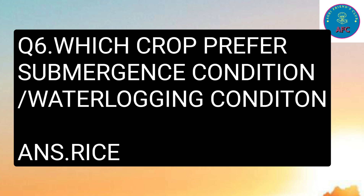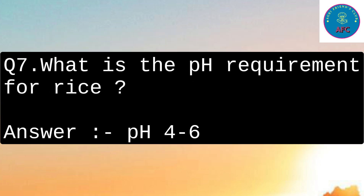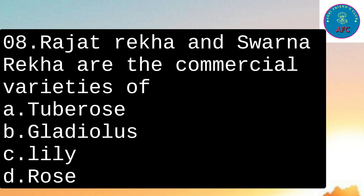You may be asked which crop prefers submergence or water logging condition — rice crop prefers submergence or water logging condition. Moving on to the next question: What is the pH requirement for rice? The correct answer is pH 4 to 6.